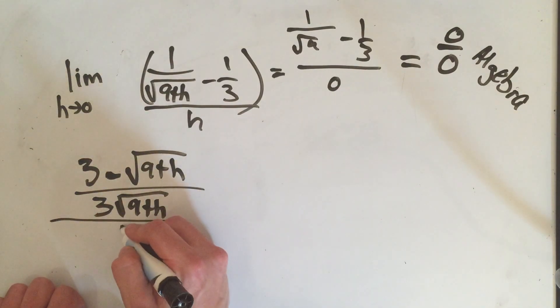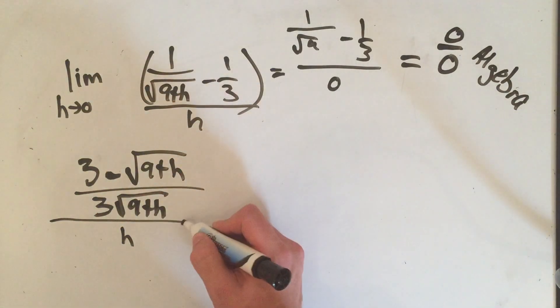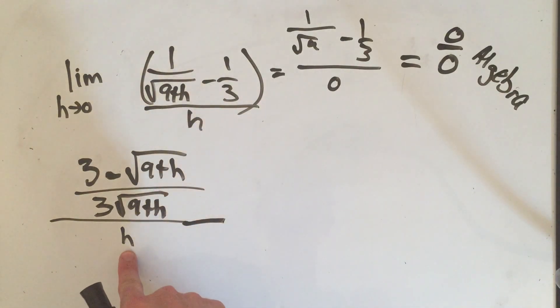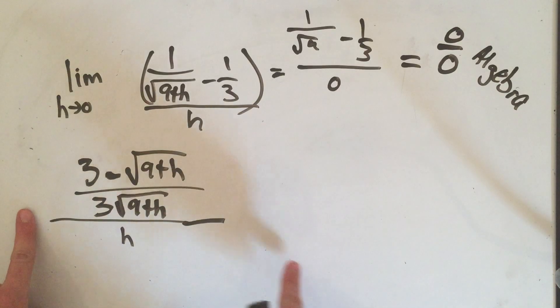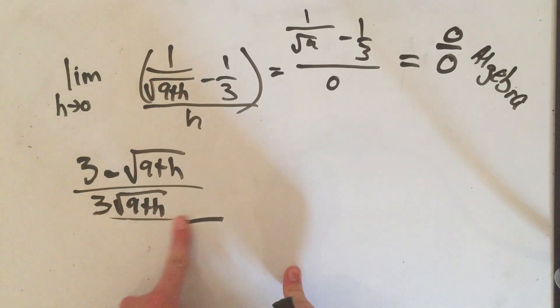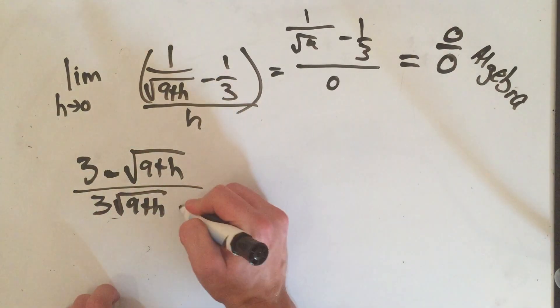On the bottom I still have h. Remember that's all over h. And if you want to be tricky, you could think of this as h over 1 and flip and multiply, but if you're getting good at your fractions like you should by now, you'll know that I can just put that h right there.